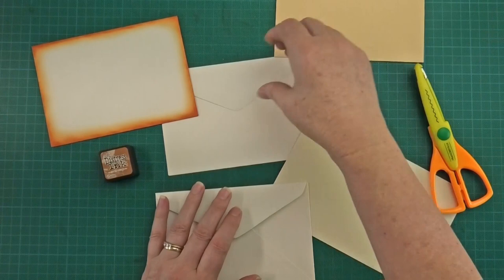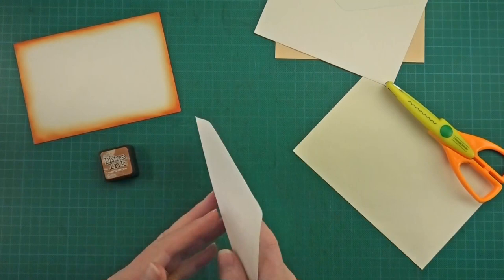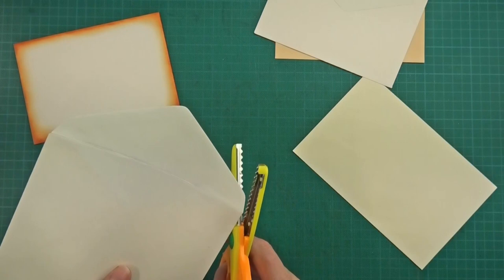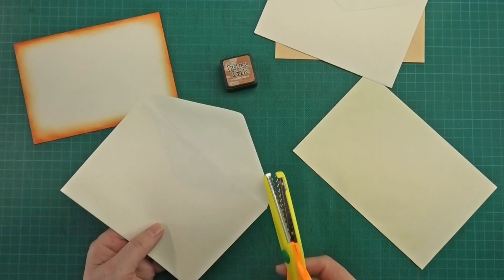So we start off by cutting our scalloped edge first. So we just get the scissors and your aim is to cut around the scalloped edge with a seamless join, and I'll show you how I do that.